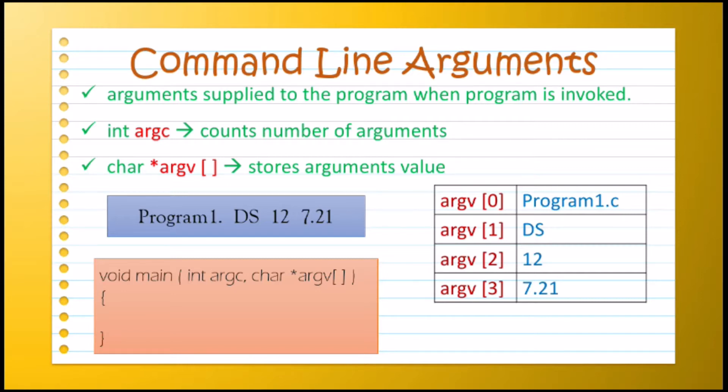So if you see main function in brackets, we have written two arguments: ARGC is of type integer which is used to count number of arguments, and ARGV array which is a pointer variable that holds the values supplied through command line. So in this way, we can use command line arguments in C language.